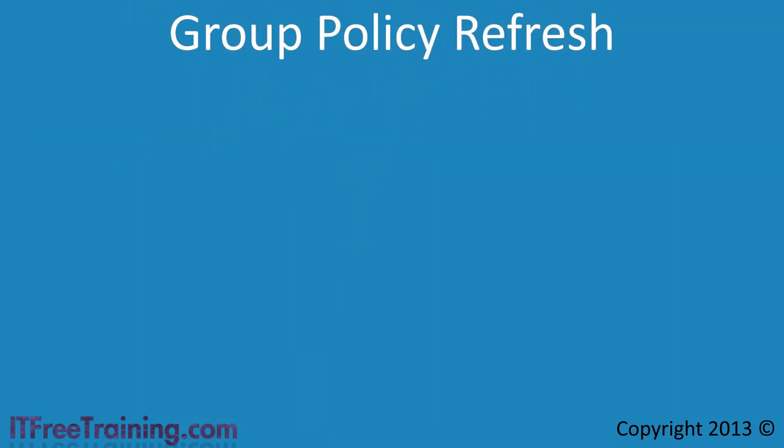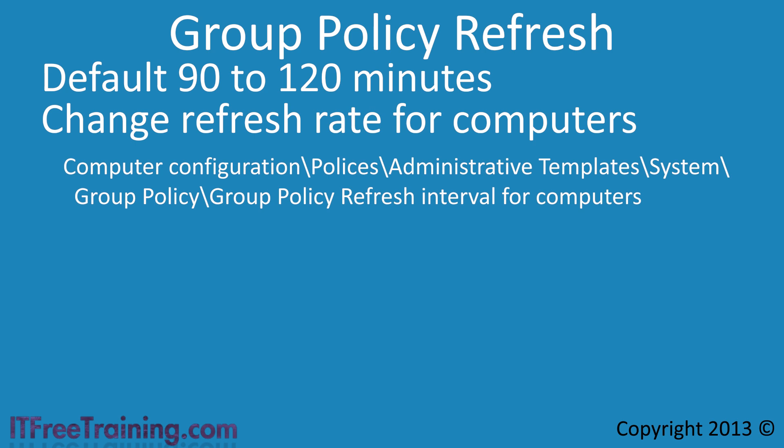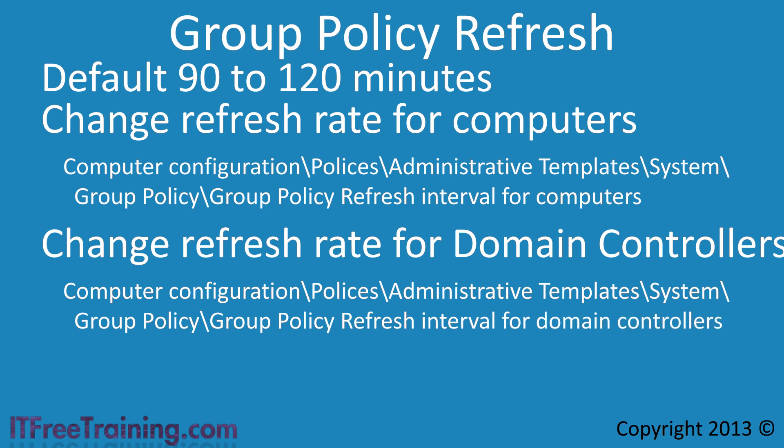Once group policy has updated, the computer will perform a refresh at certain intervals to check for changes. By default, this will occur between 90 and 120 minutes, and you can change this at the relevant policy location. There is one setting for regular computers and another setting for domain controllers. In the group policy setting, you have the option to add a random offset. Without a random offset, if all your client computers start up at the same time they will attempt to update group policy at the same time, which could potentially cause performance problems for your network. The default settings configure the refresh to 90 minutes with a random offset of 30 minutes, which is why the refresh happens between 90 and 120 minutes.